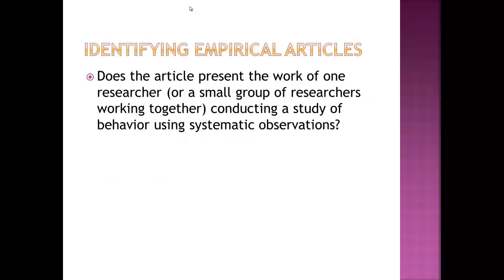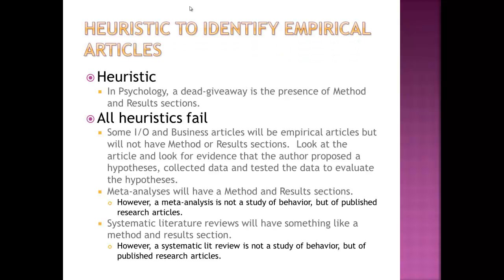Applying that definition will allow you to identify empirical articles. You can ask yourself: does this article present the work of one researcher or small group conducting a study of behavior using systematic observations? To develop that skill takes time, but in the interim you can apply a heuristic — a problem-solving shortcut. In psychology, the heuristic for identifying an empirical article is the presence of a method and results section. If you see those bold section headings, most likely that is an empirical article.